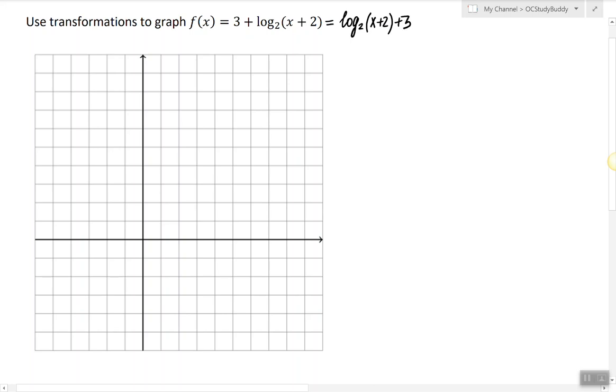So now the function is written in this form so I can clearly see what each transformation means. Plus 2 on the inside means we're going to shift the graph to the left, and plus 3 on the outside means we're going to bring the graph up by 3 units.